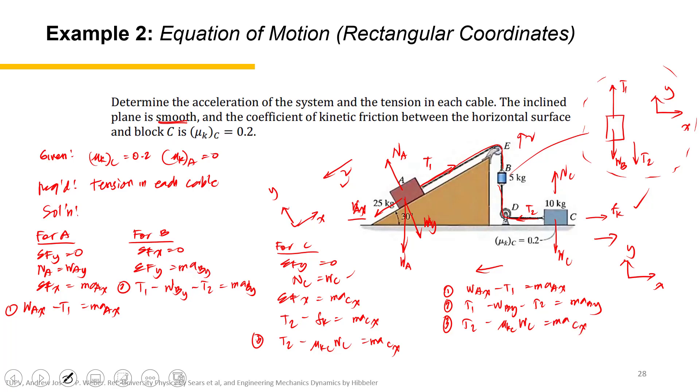If I'm going to add all these equations, T1 and T2 will get cancelled out. Add all these to result: W_Ax minus W_By minus mu_K_C W_C equals all these.